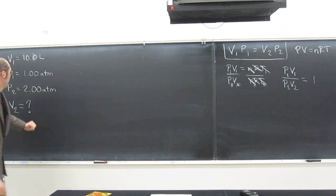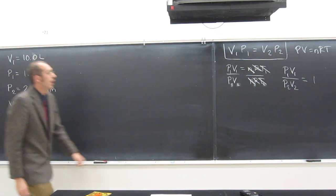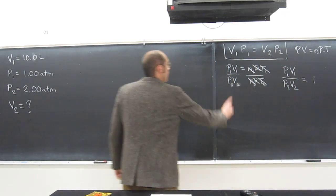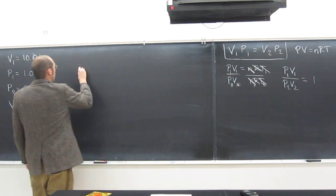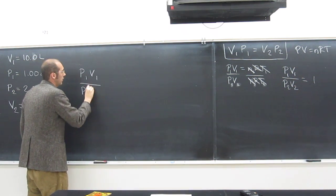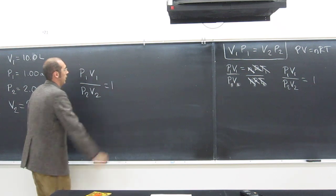So what are we looking for? We're looking for V2, right? So where is that? It's down here, right? So let's just take that equation that we got, P1 V1 over P2 V2 equals 1, right?